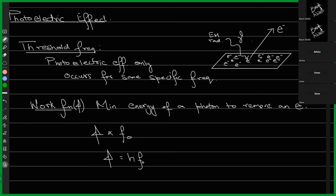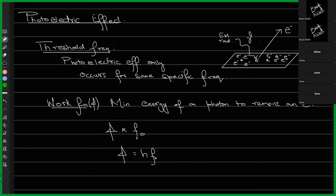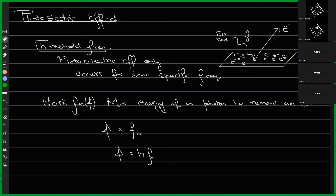Before we finish, someone had a question. I think it was regarding the application of the photoelectric effect — about the metal itself getting charged. Exactly. So electrons are emitted, and the metallic surface would become positively charged as electrons leave. The net charge would be positive. It would leave the surface charged, and there are multiple uses for this.